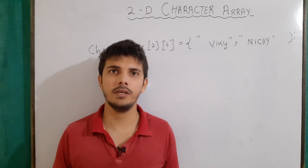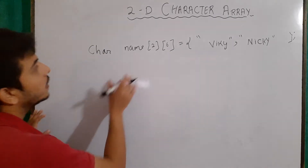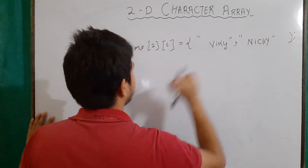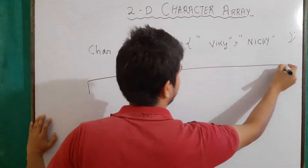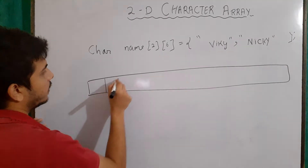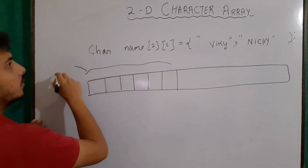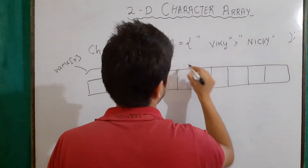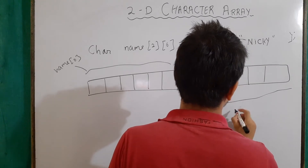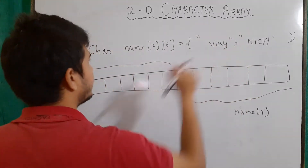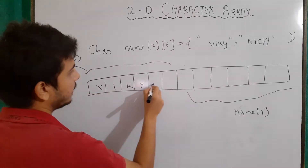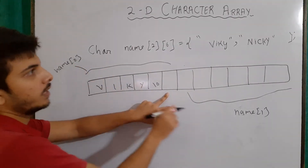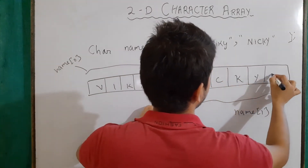Now let's see what happens in memory when using a two-dimensional character array. Here I have written name[2][6], meaning two strings with maximum length of six each. A contiguous memory block is given to our variable. The first six locations belong to name[0] — storing v, i, k, y, '\0', and one empty space. The next six locations belong to name[1] — storing n, i, c, k, y, and '\0'.